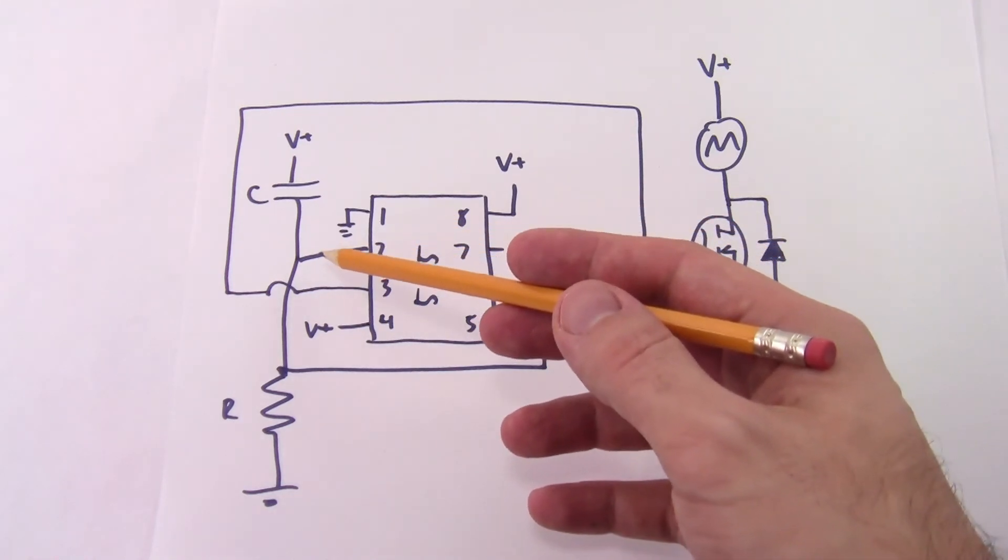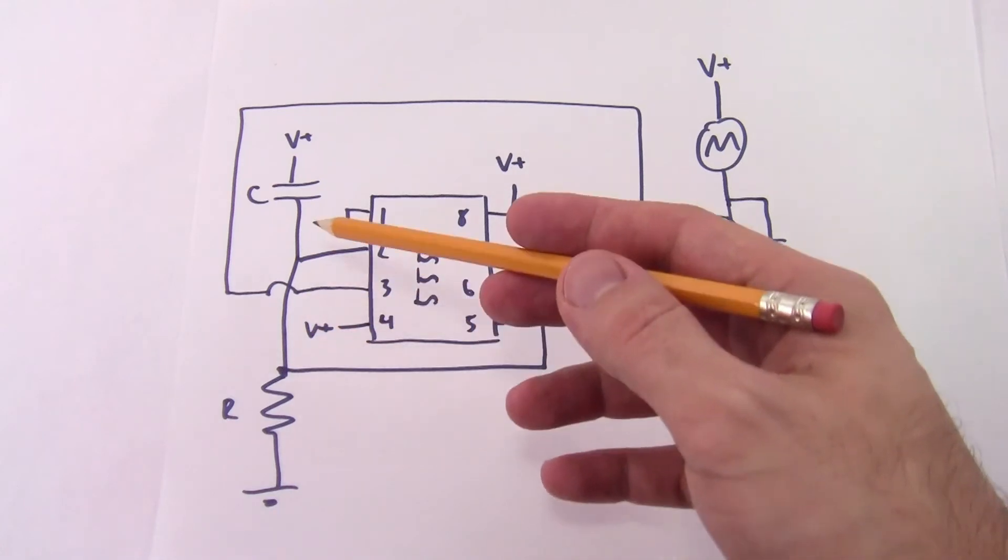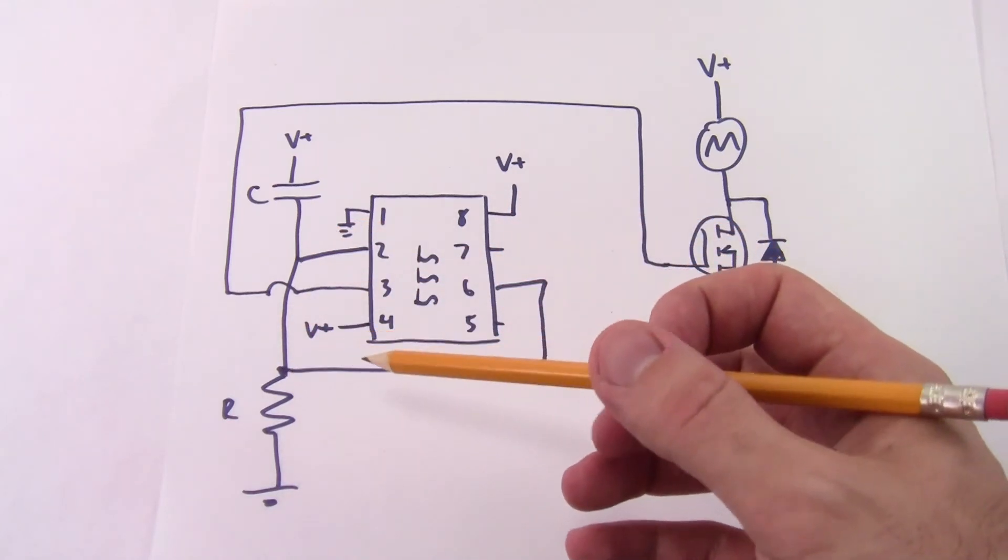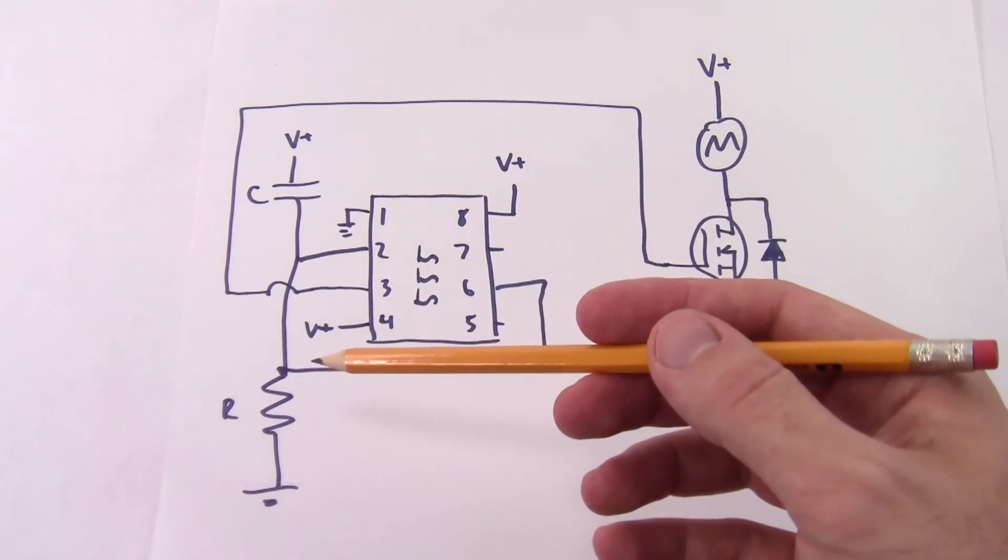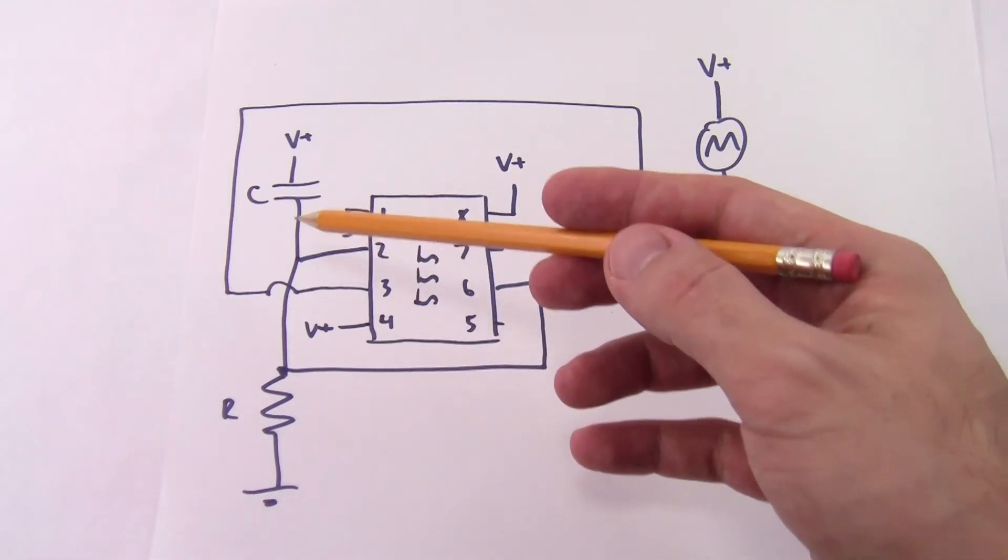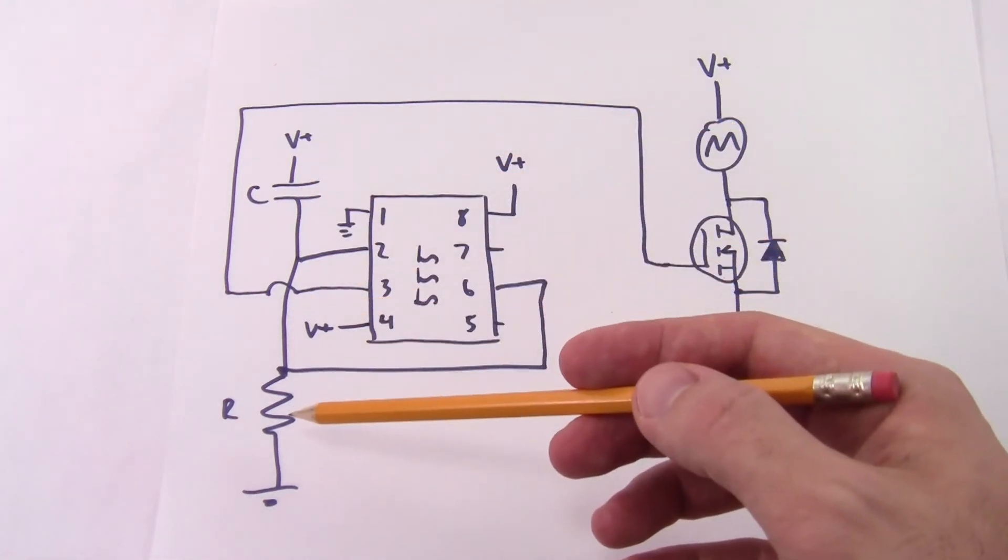Pin 2 is connected to your capacitor and your resistor and that RC value is going to determine the duration of the delay. The bigger the R and C values the longer the delay. So the capacitor goes up to V plus, the resistor goes down to ground.